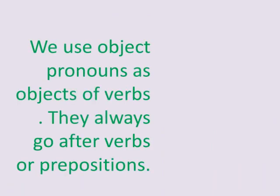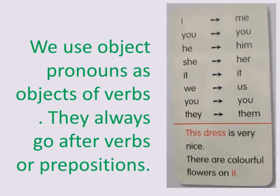We use object pronouns as objects of verbs; they always go after verbs or prepositions. The object pronouns are: I → me, you → you, he → him, she → her, it → it, we → us, you (plural) → you, they → them. For example: this dress is very nice; there are colorful flowers on it — 'it' refers to the dress and is an object pronoun.